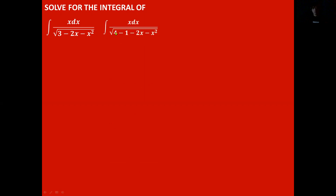So what we'll do is replace the numbers with ones that have exact square roots. Let's say 4 minus 1 — 4 has an exact square root, and 1 has an exact square root, and 4 minus 1 is also equivalent to 3. So the radicand is not affected.